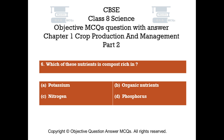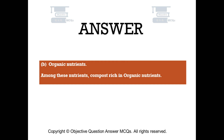Question number 6. Which of these nutrients is compost rich in? Option A: Potassium. Option B: Organic nutrients. Option C: Nitrogen. Option D: Phosphorus. The right answer is Option B, Organic nutrients. Among these nutrients, compost is rich in organic nutrients.